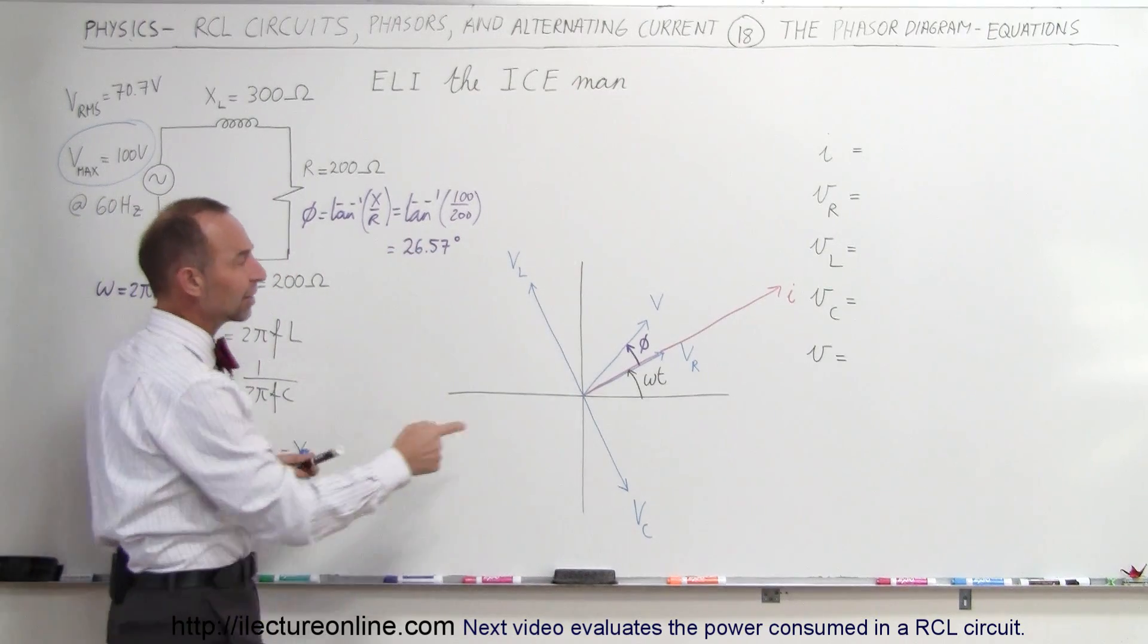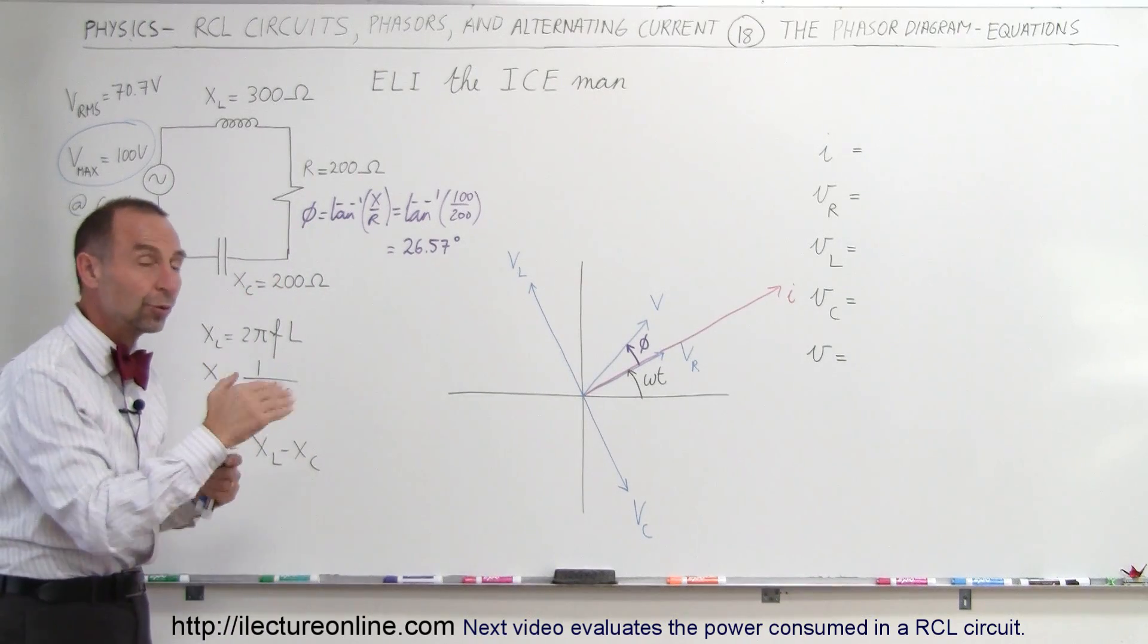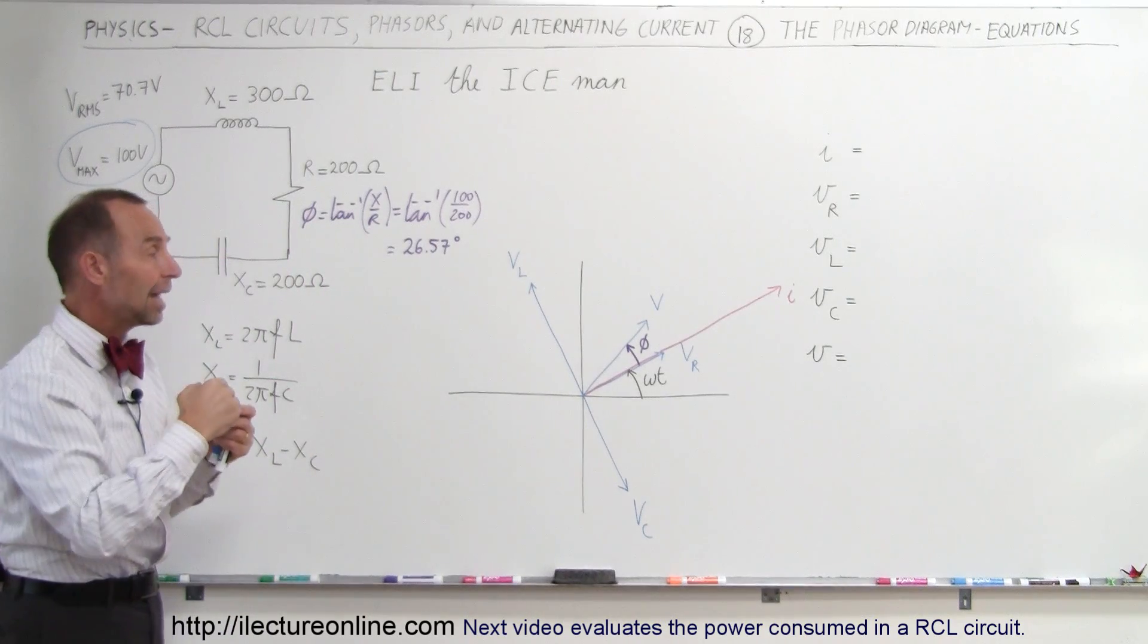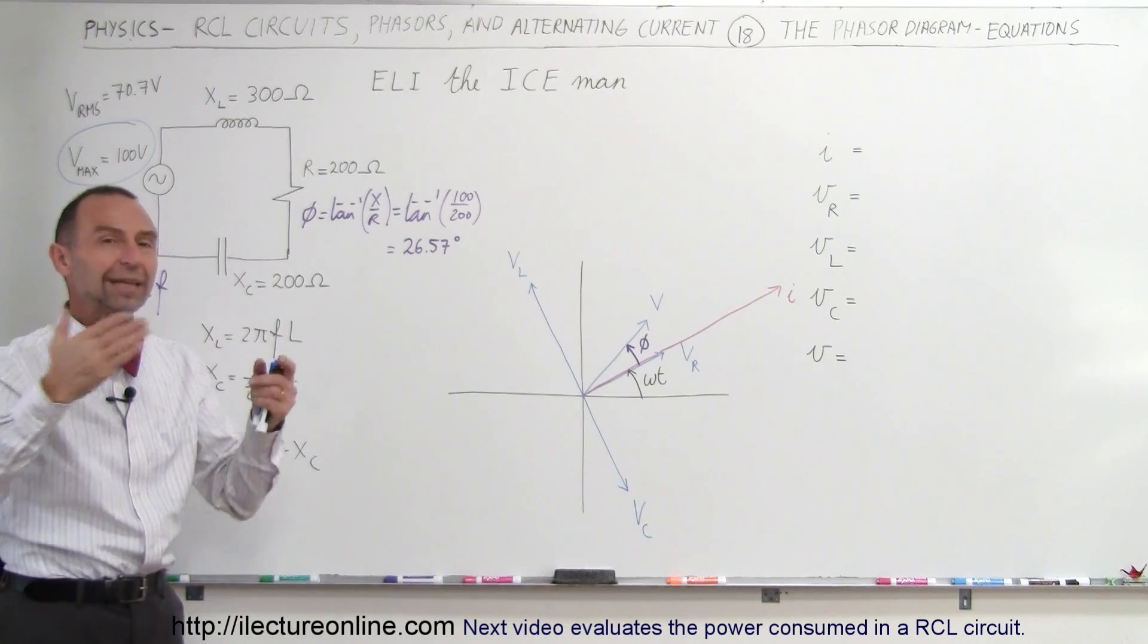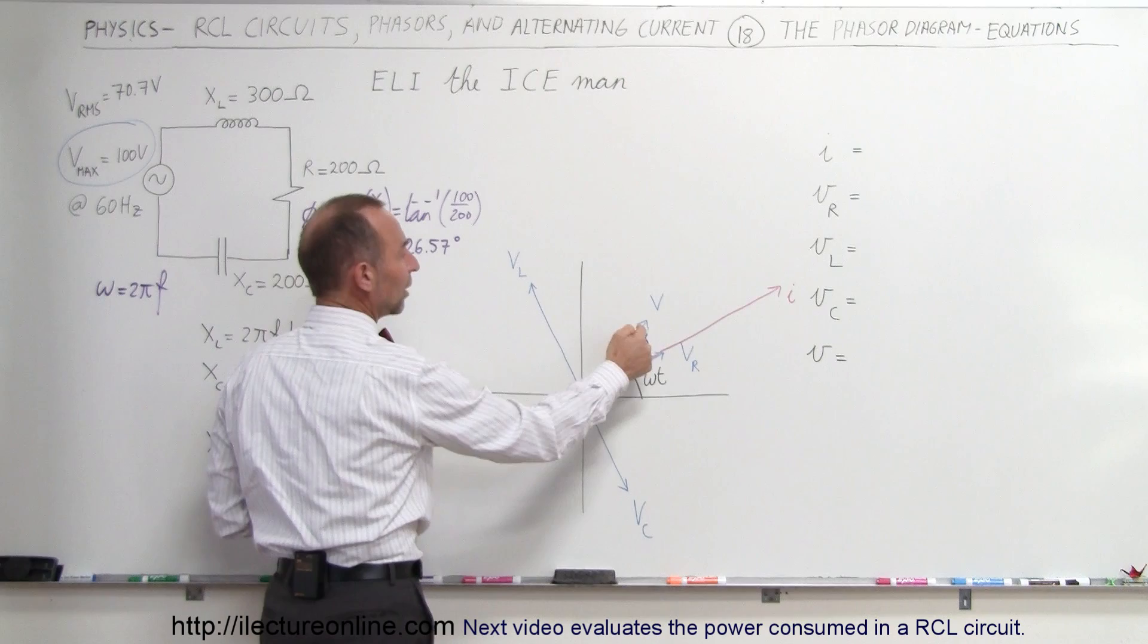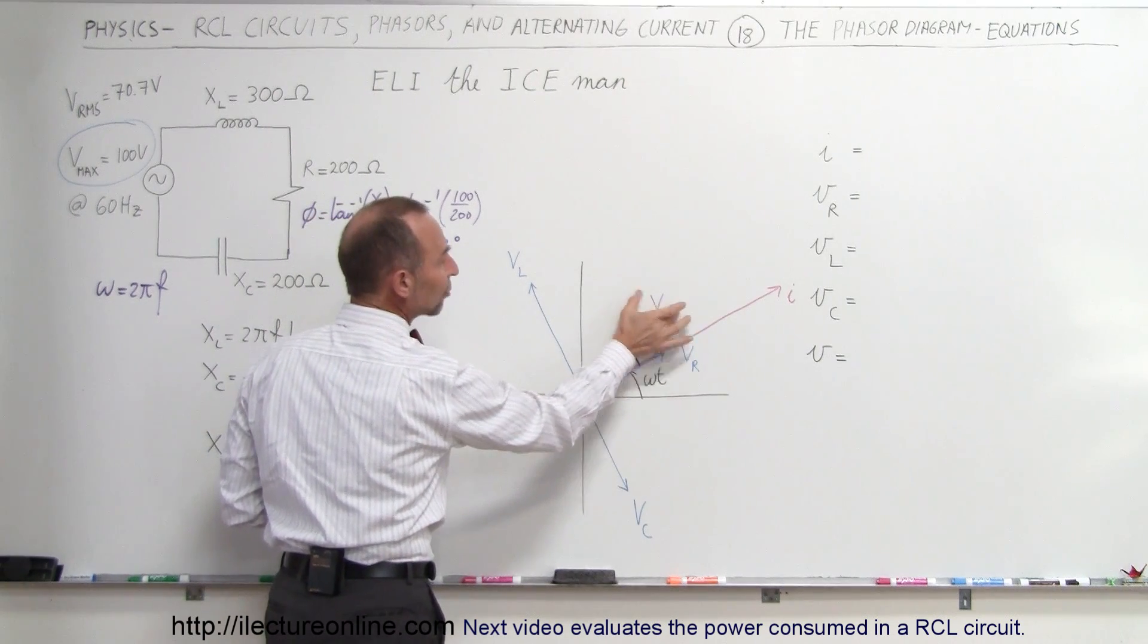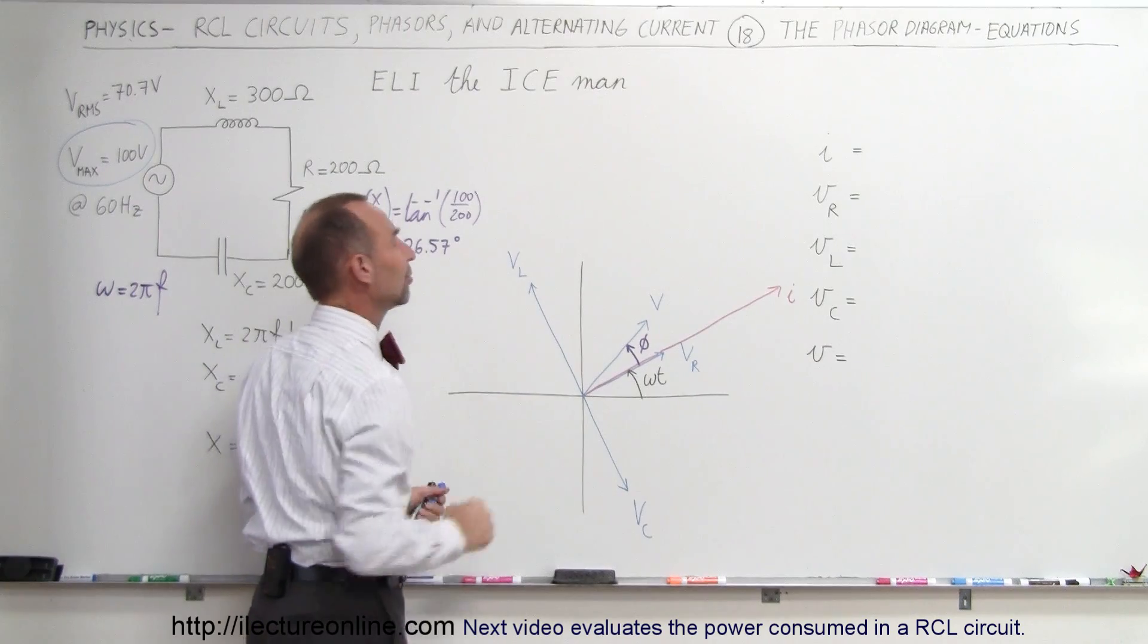So here's the phase angle phi, and the phase angle represents the phase difference between the current, when the current reaches a maximum value, and when the voltage reaches a maximum value in the circuit. In this case, notice that time moves forward this way, so voltage is already ahead of the current, so voltage leads the current by 26.57 degrees.